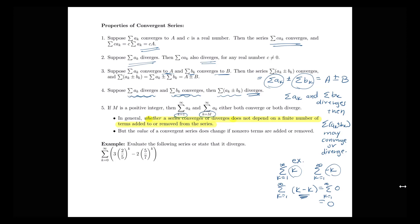If we just add a finite number of terms, that doesn't change anything regarding convergence or divergence. What would change, though, is the value of the series in the case that you're working with a convergent series. So convergence or divergence is not affected by a finite number of terms, but the value of the sum would be affected.